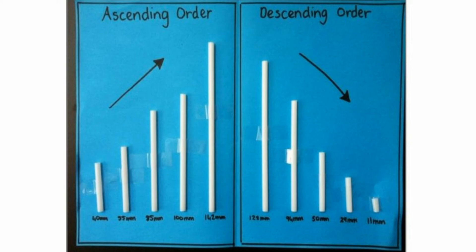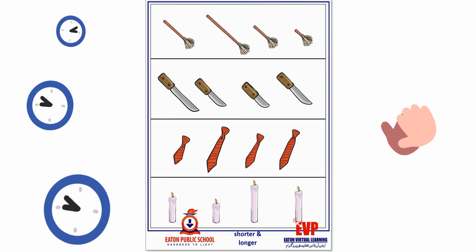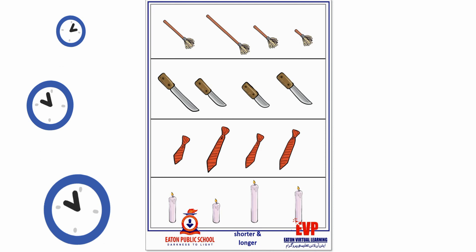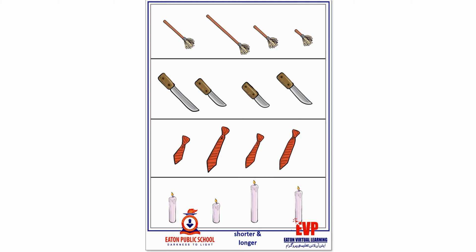Students, ascending और descending को और अच्छे से समझने के लिए एक activity है जहाँ आपने smallest और biggest objects को identify करना है। Ascending के concept से correlate करते हुए सबसे छोटा object पहले रखना है, उसके बाद comparatively increasing size के objects place करने हैं। Descending order में यह activity reverse करनी है — बड़े वाले object को सबसे पहले रखना है और फिर comparatively छोटे objects उसके बाद।